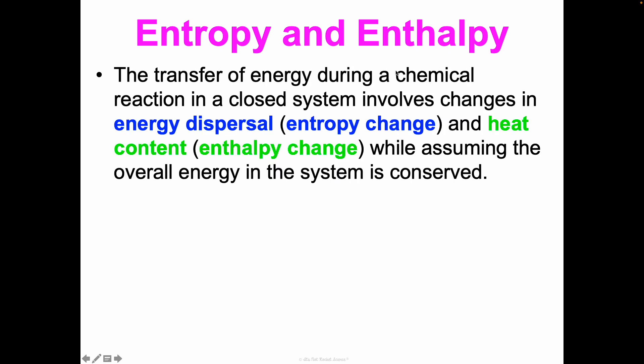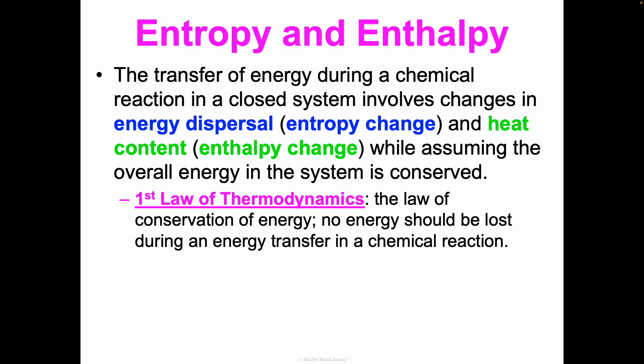Before we wrap up, I want to introduce two other terms: entropy and enthalpy. The transfer of energy during a chemical reaction in a closed system involves changes in energy dispersal — known as the entropy change — and also the heat content, which is the enthalpy change. A mnemonic: heat has a T and an H, which we see in enthalpy; entropy has an R like energy. We see changes in energy dispersal and heat content while assuming the overall energy in the system is conserved — because of the first law of thermodynamics, the law of conservation of energy.